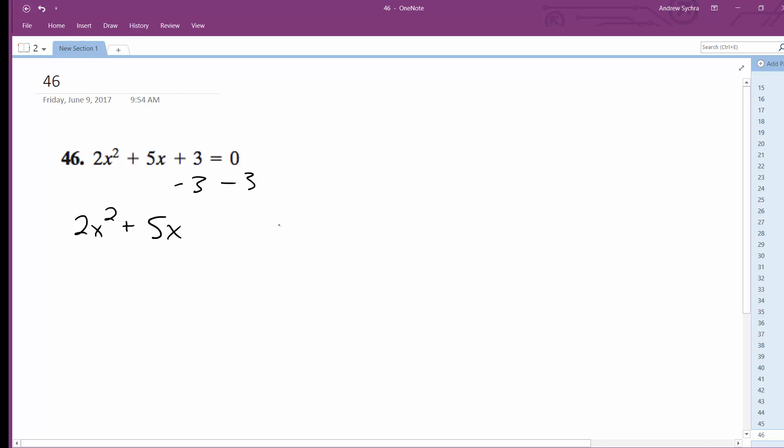Plus 5x equals negative 3. Then we take half of this. Or actually what I'm going to do is I'm going to factor out 2. So I get 2x squared plus 5 over 2.